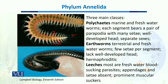Polychaetes have a well-developed head, and their sexes are normally separate, meaning male and female organisms are present as distinct individuals.